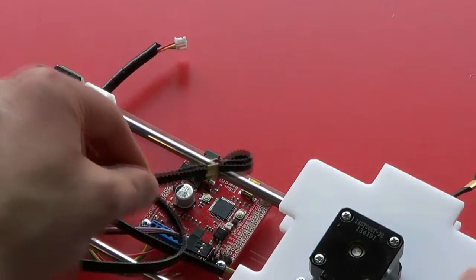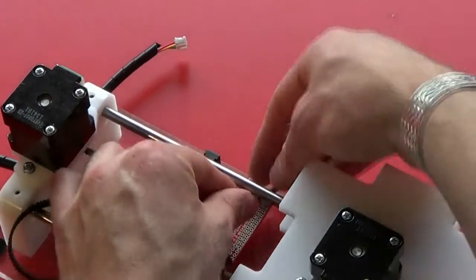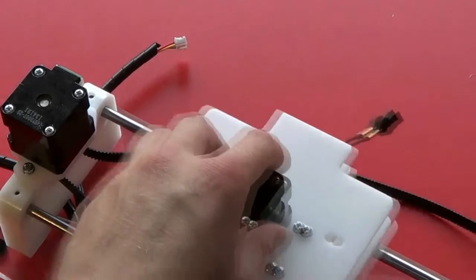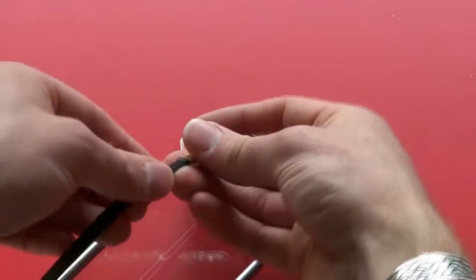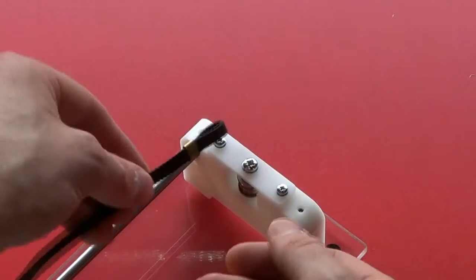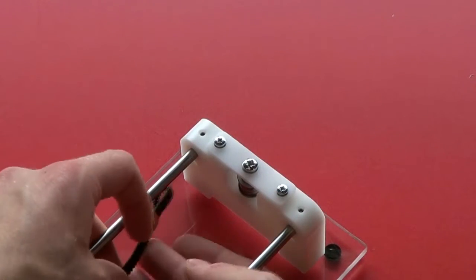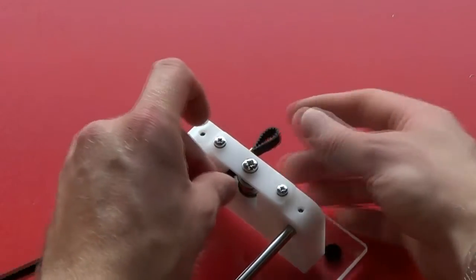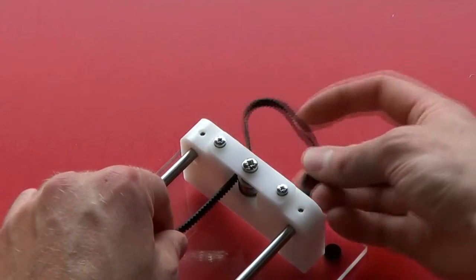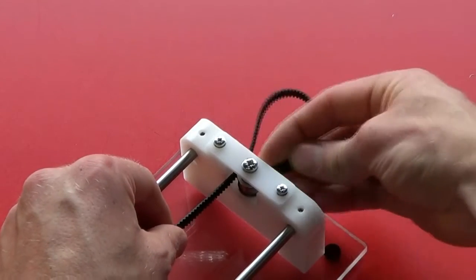With the other end of the belt, again with the teeth facing you, we pass it around the rear of the idler pulley, and then back around the front.